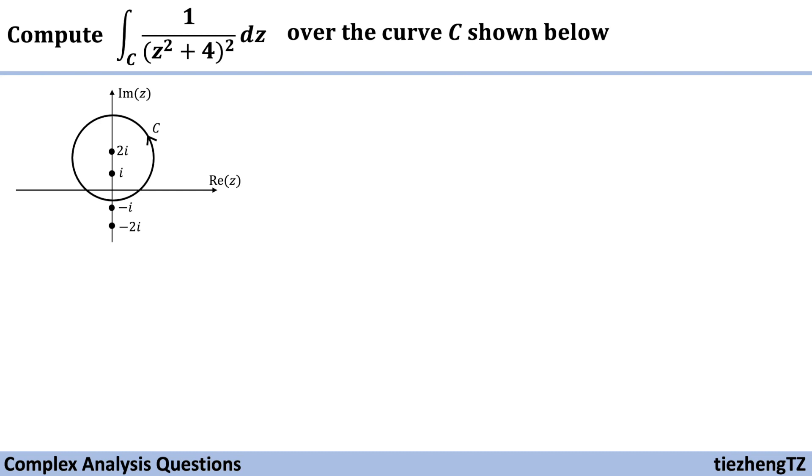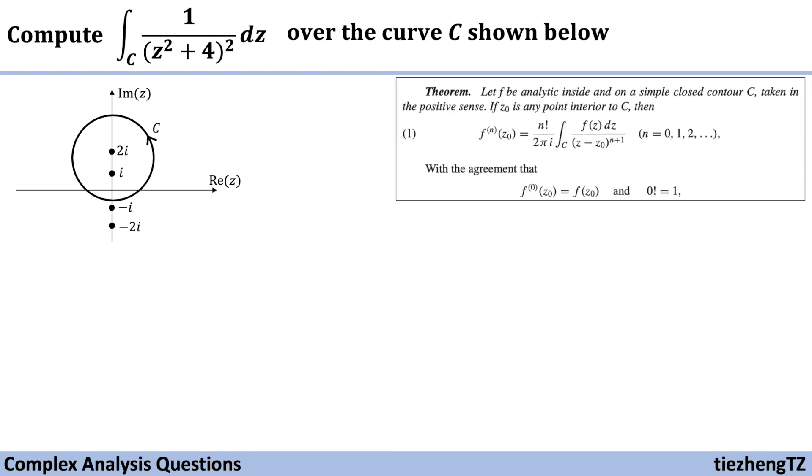However, in this question, we notice that in the denominator part, there is a square there. So we know we are going to use this theorem. Let the function f be analytic inside and on a simple closed contour C taken in the positive sense. If the point z₀ is any point interior to the given contour C, then we have the nth derivative of f(z₀) equals n factorial over 2πi times the integral f(z) dz over (z - z₀) to the power of n plus 1.